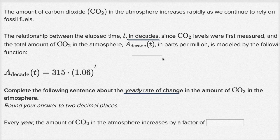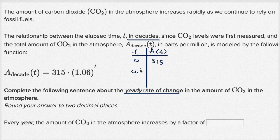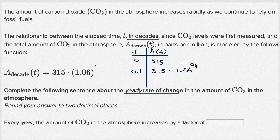I always find it helpful to make a bit of a table, just so we can really digest things properly. So I'll say T and A(T). When T is equal to zero, at the beginning of our study, 1.06 to the zero power is one, so we have 315 parts per million. So what's a year later? A year later is going to be a tenth of a decade — remember, T is in decades — so a year later is 0.1 of a decade.